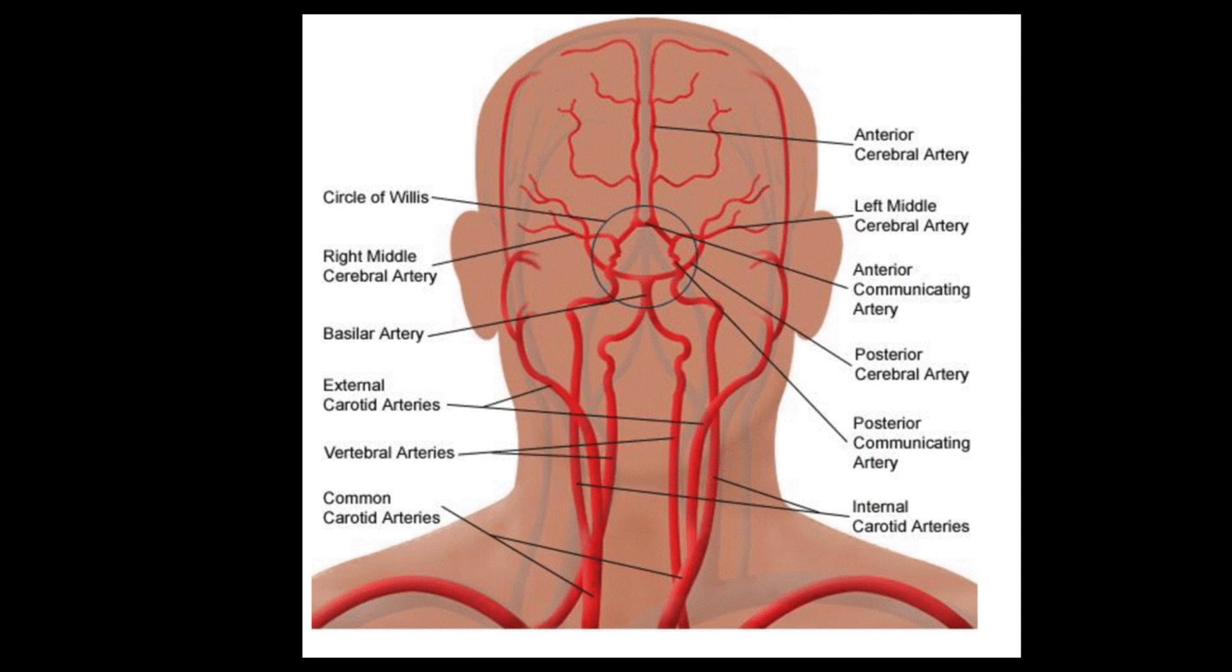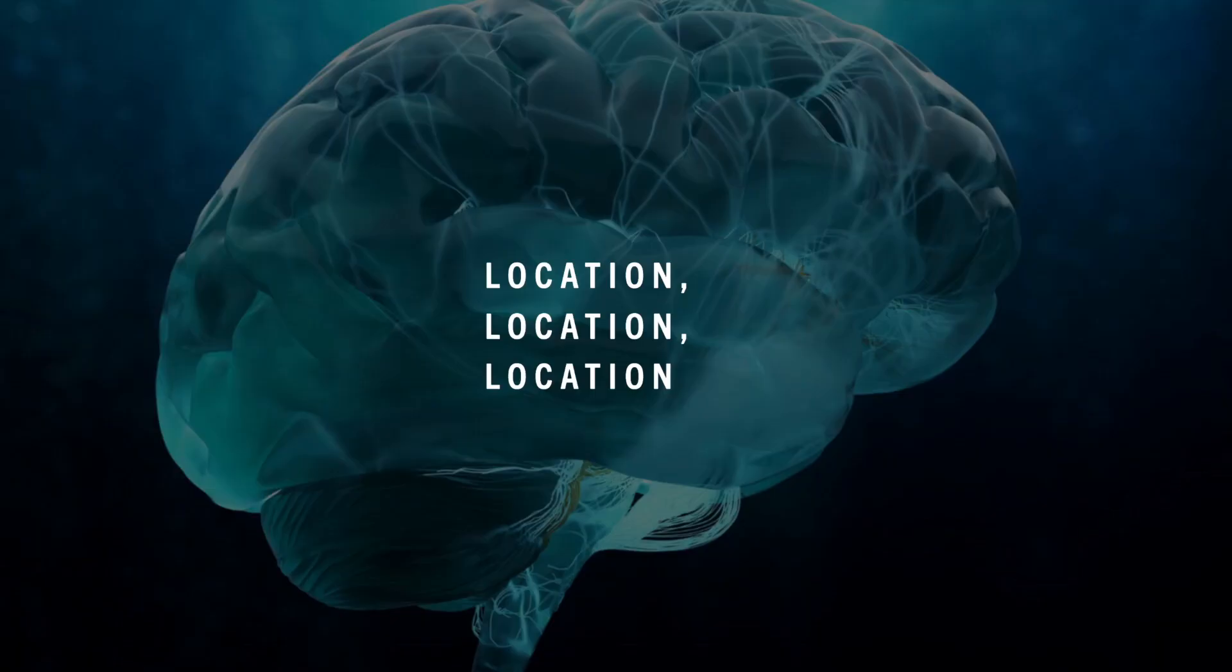While a stroke can occur in any artery within the CNS, it most commonly occurs in the brain. Each artery serves a different area of the brain. Since each brain region has a different primary function, stroke survivors will have different symptoms based on the artery and area of the brain affected.